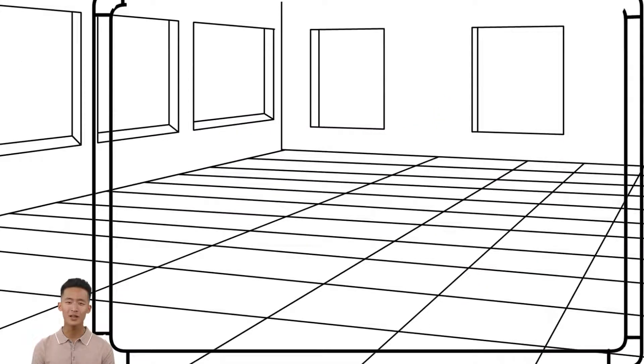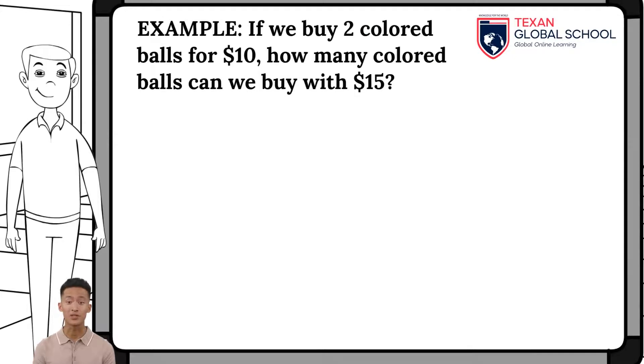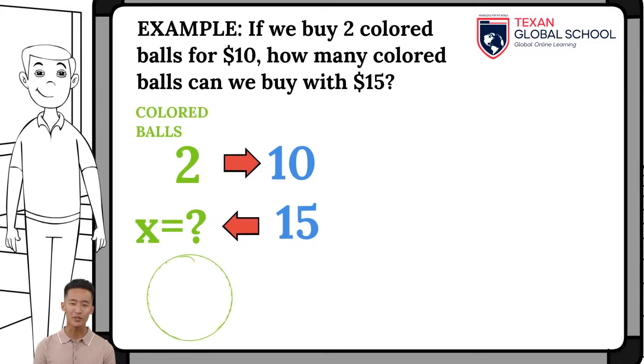In this other example, if we buy two colored balls for ten dollars, how many colored balls can we buy with fifteen dollars? So, consider the Rule of Three. As stated, two colored balls cost ten dollars, so with fifteen dollars, how many colored balls can we buy? The number of colored balls is now the unknown.